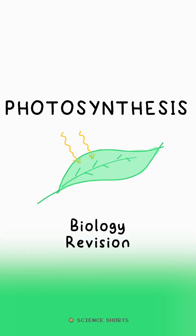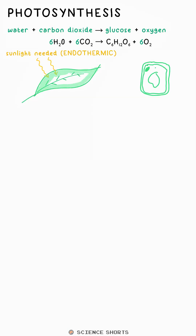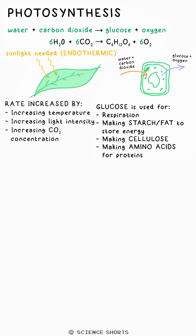Photosynthesis happens in chlorophyll and chloroplasts in plant cells to provide food for the plant. The rate of photosynthesis is increased with higher temperature, increasing light intensity, or increasing CO2 concentration.